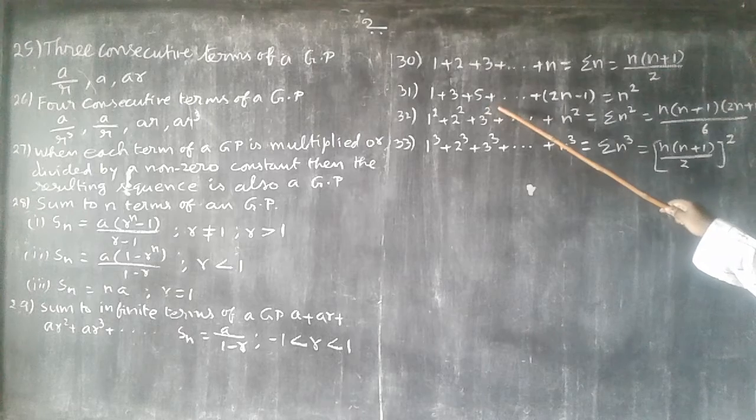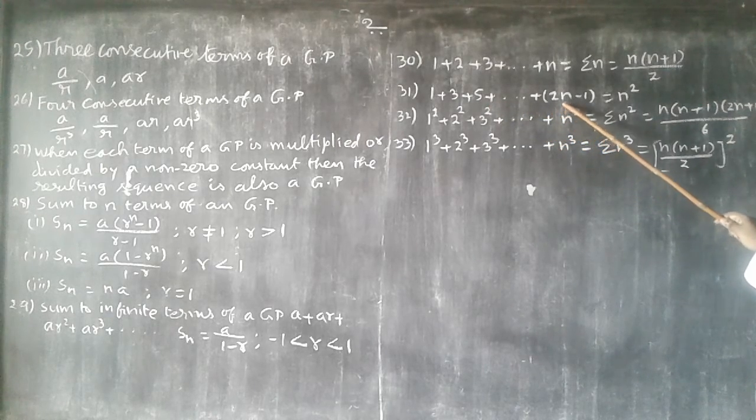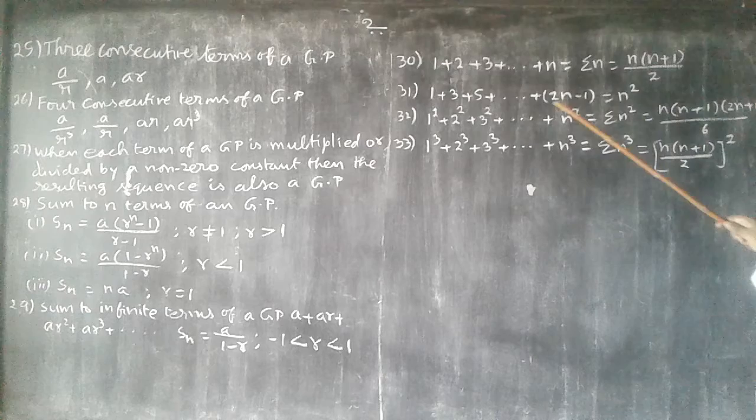31st. 1 plus 3 plus 5 and so on, 2n minus 1 is equal to n square. That's odd numbers.